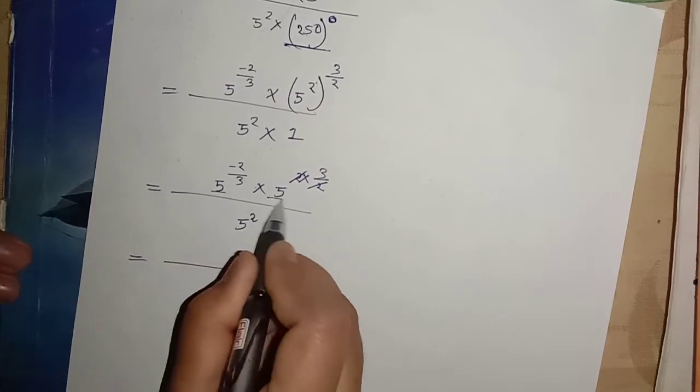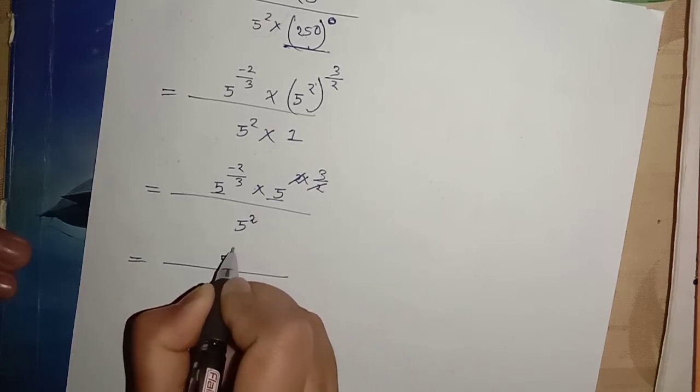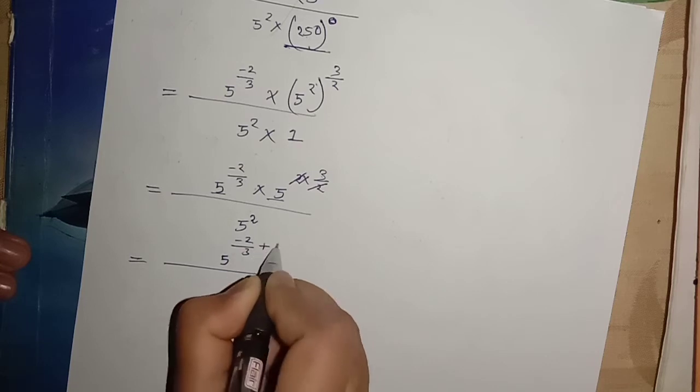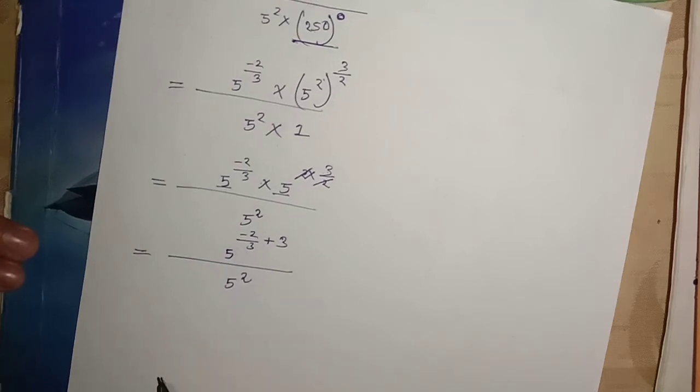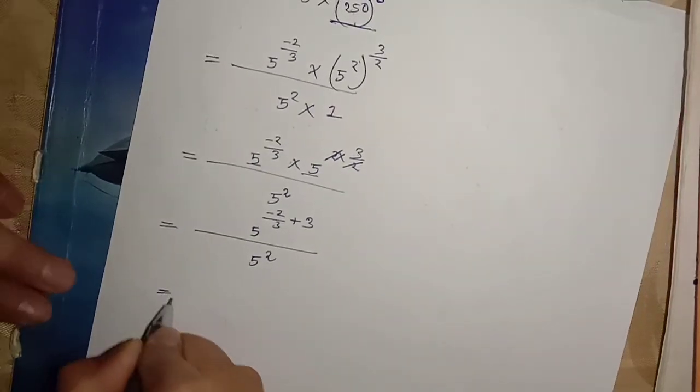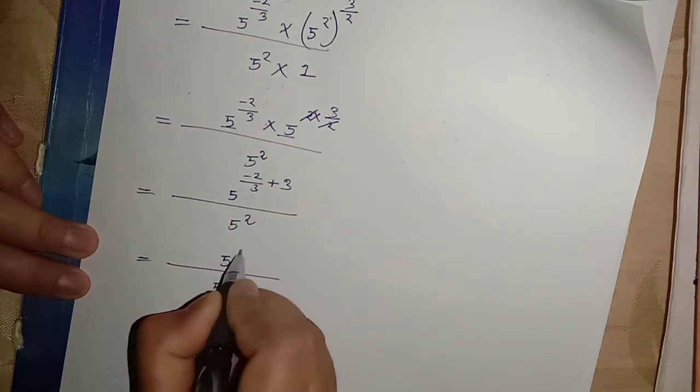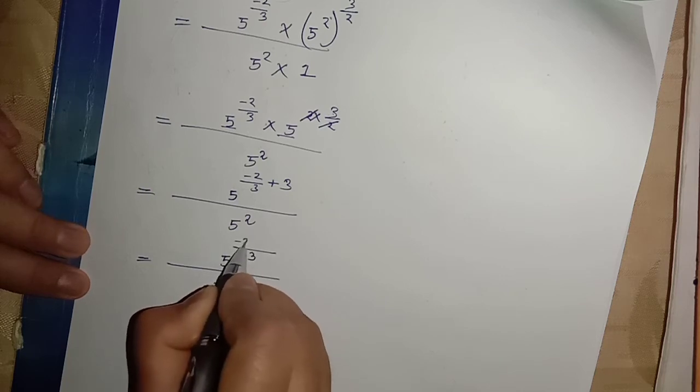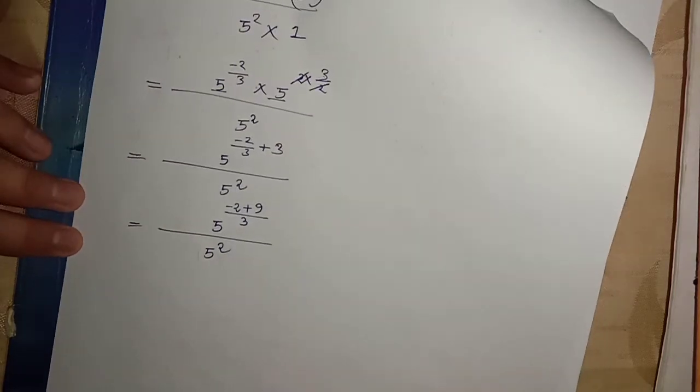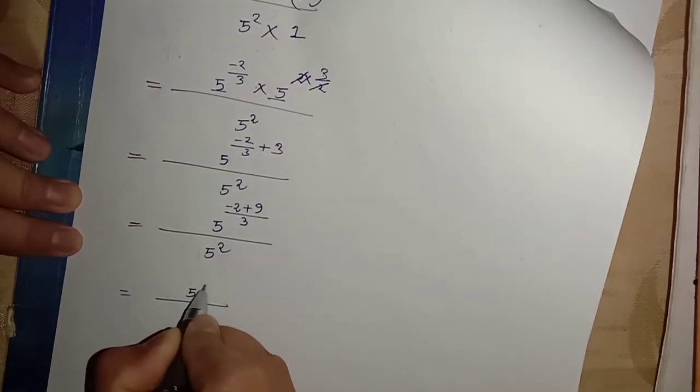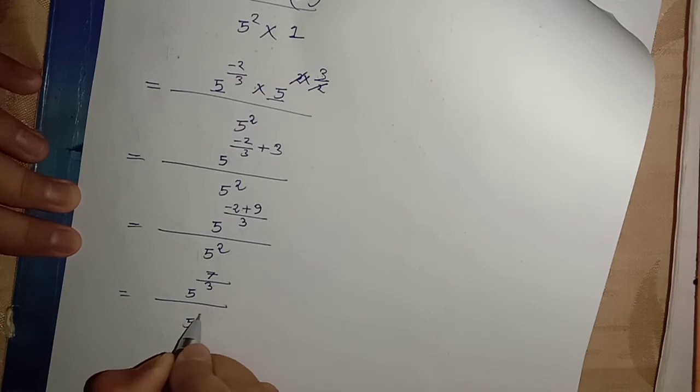Here 5 and here 5, we take minus 2 upon 3. 5 square, minus 2 plus 9 to 1 is 7 upon 3 of our total 5. 5 square to a power of 7 upon 3.